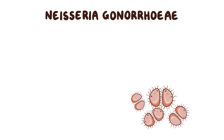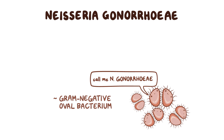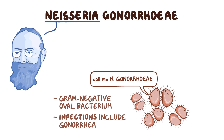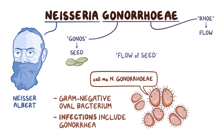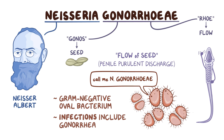Neisseria gonorrhoeae, also known as N. gonorrhoeae, is a gram-negative oval bacterium that infects humans, causing a number of infections including gonorrhoeae. The word Neisseria comes from Albert Neisser, a German physician who discovered it, while gonorrhoeae is from the Greek words gonos, which means seed, and rho, which means flow — meaning flow of seed. This is an illustration referring to the penile purulent discharge, which was mistakenly thought to be semen in infected males.